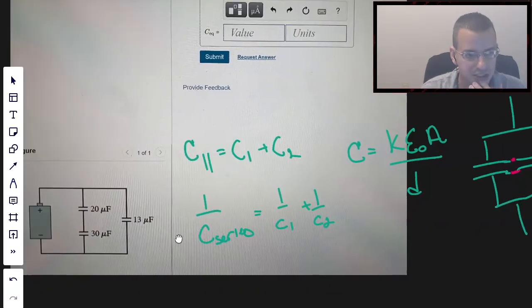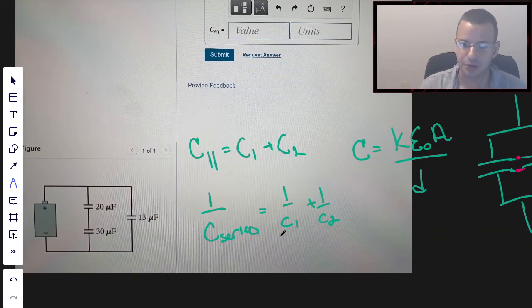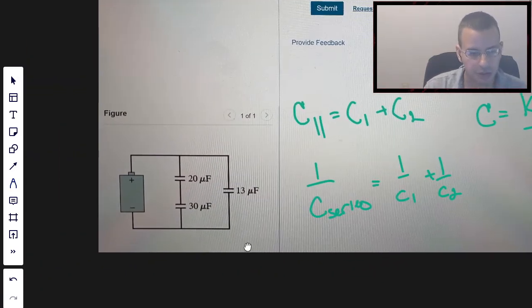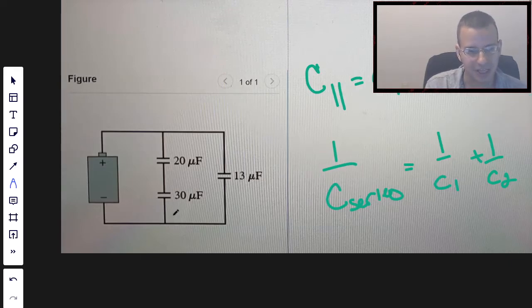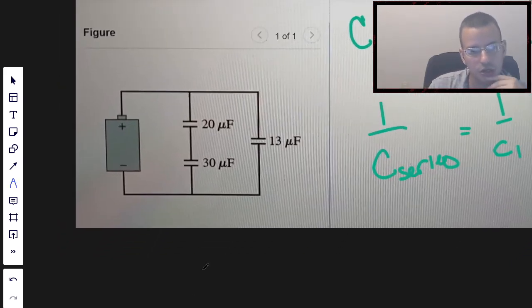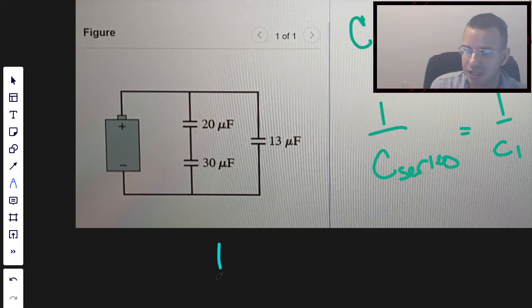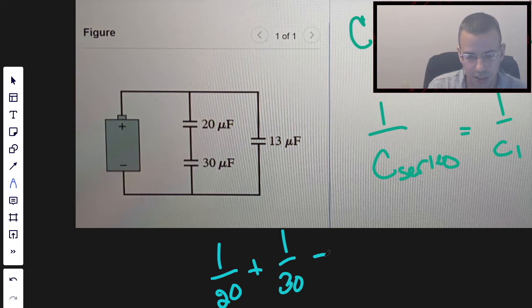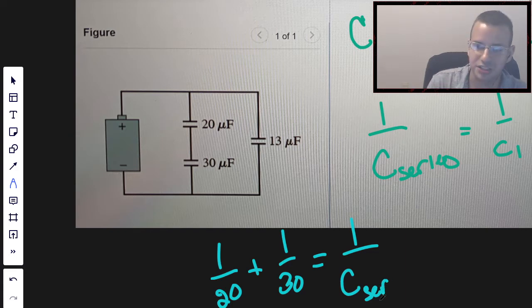And then when we do them in series, we add the reciprocals and take the reciprocal. So we're first going to combine the capacitors in series. We're going to keep everything in microfarads, so I'll ignore the units until the end. So 1 over 20 plus 1 over 30 equals 1 over Cs, or SER for series. It's the equivalent capacitance.